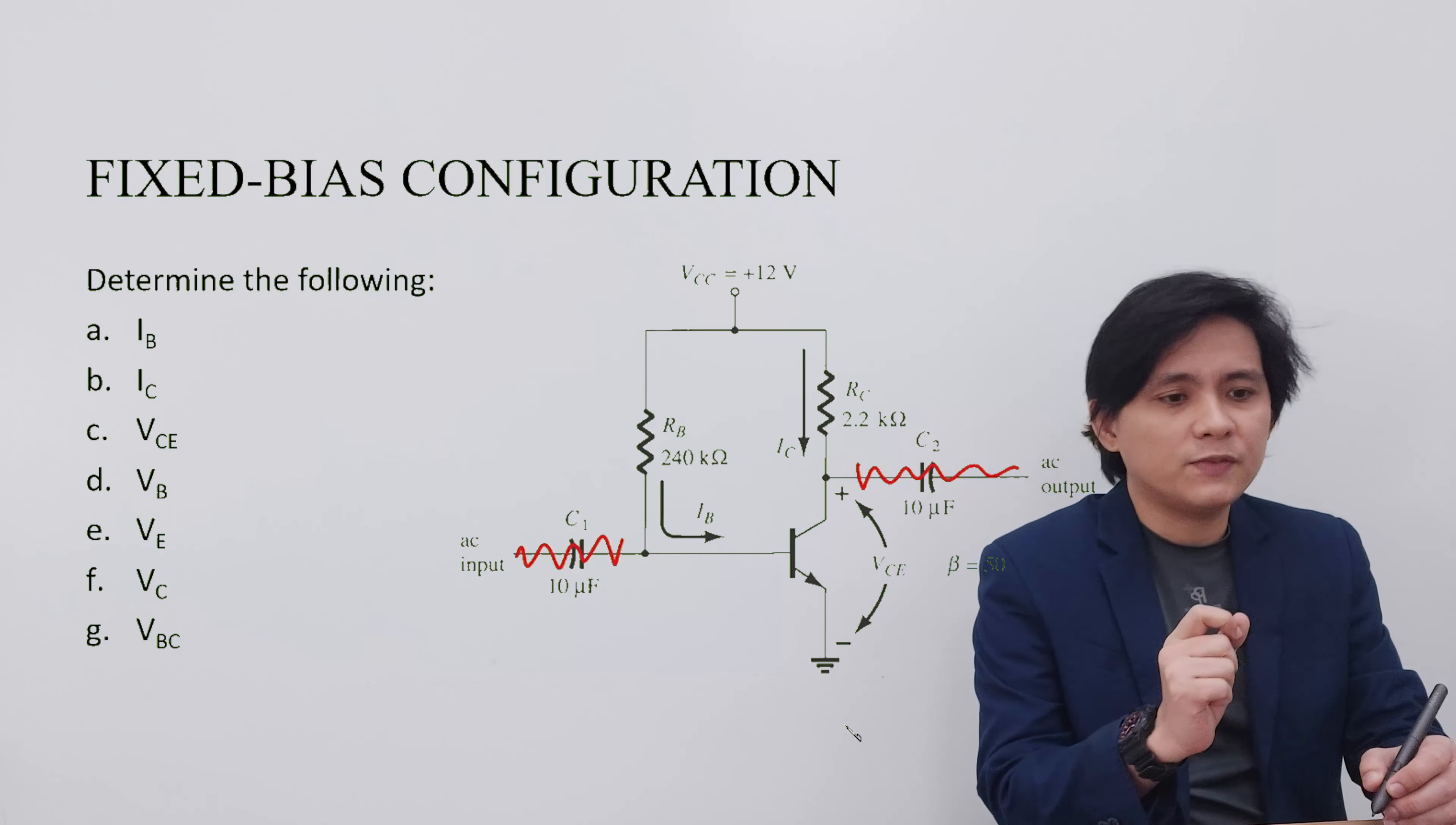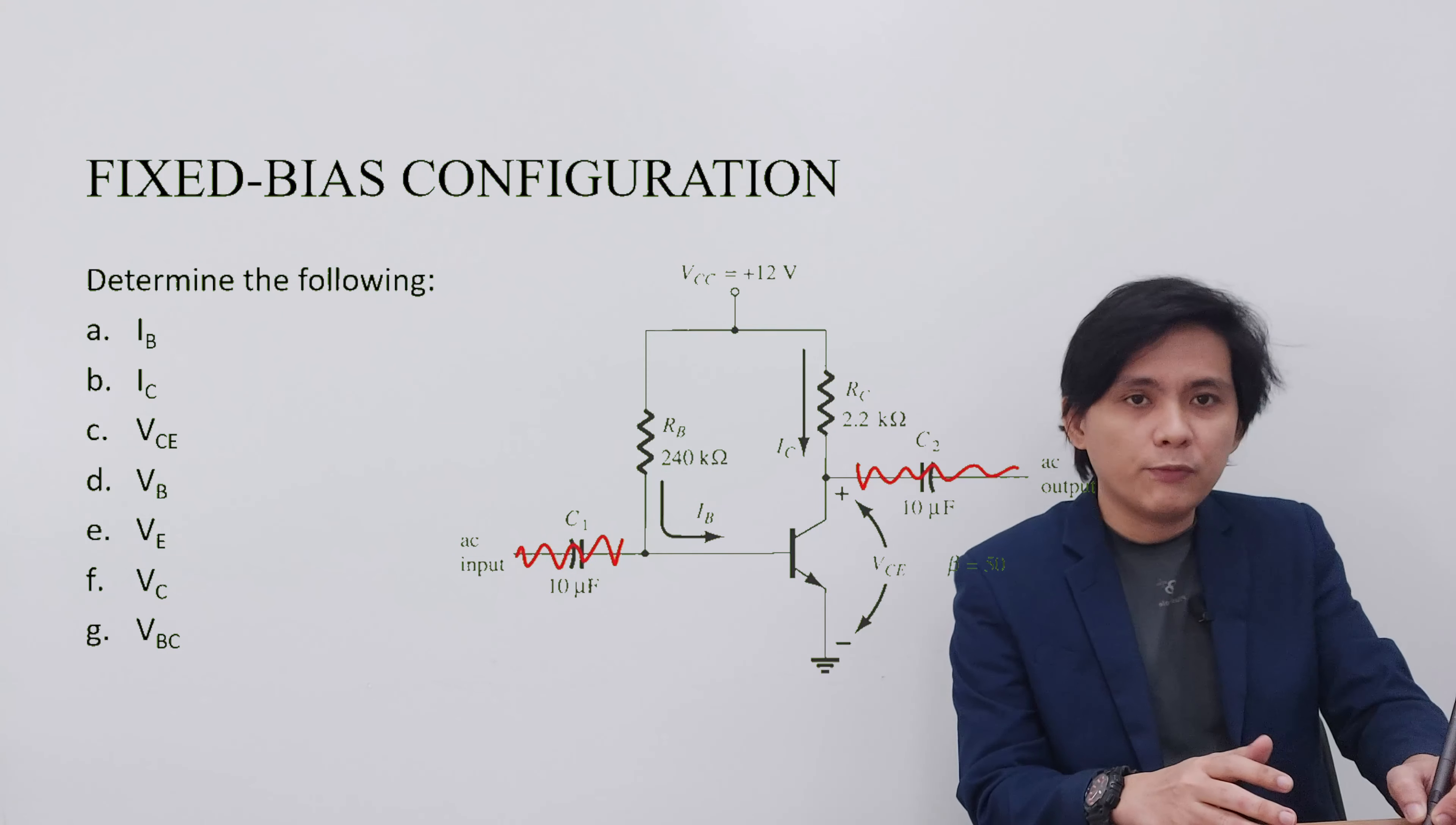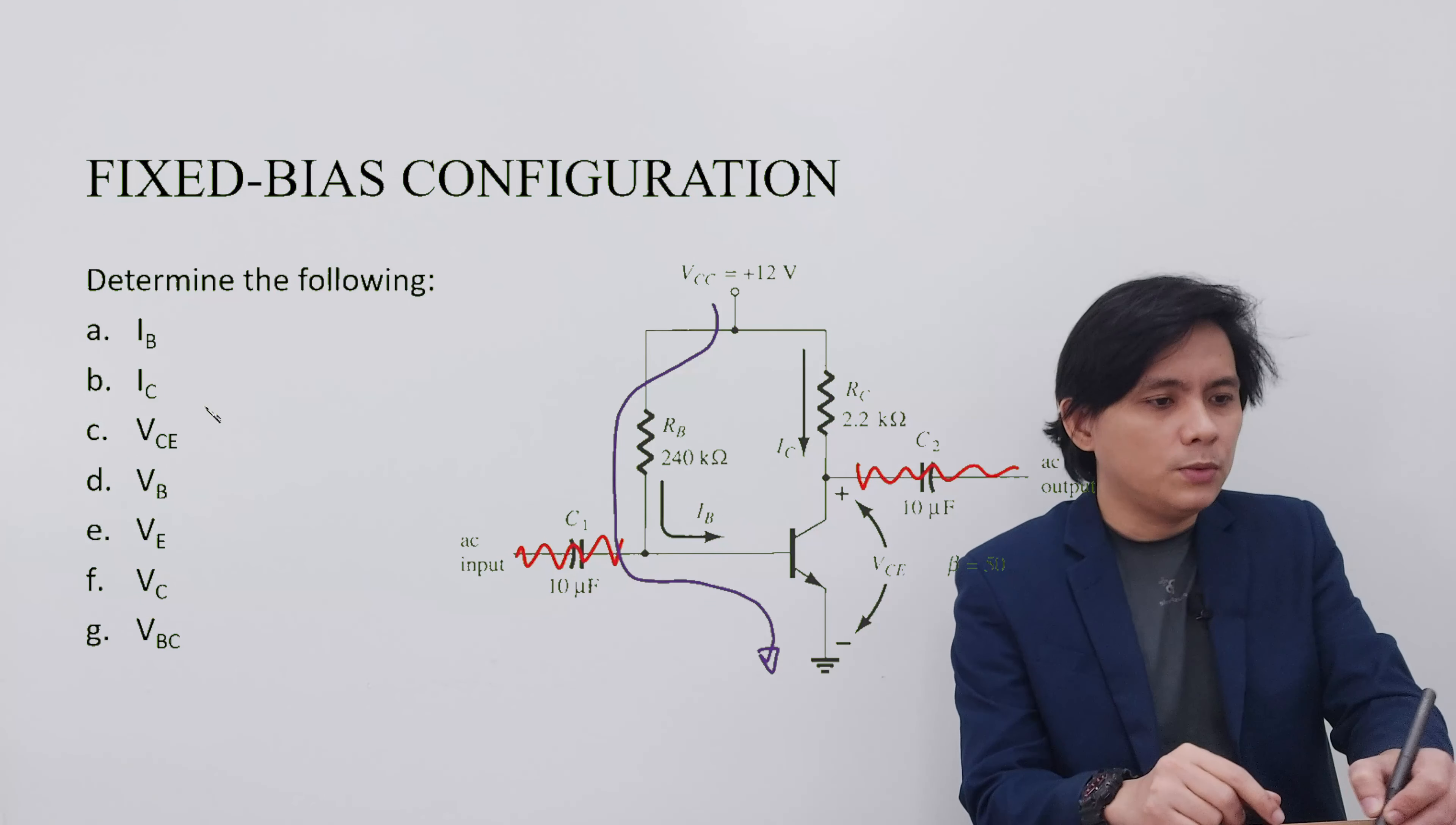The first thing that we have to solve is the IB. To solve for that, we have to do a loop from the voltage source going to the ground through the VBE.